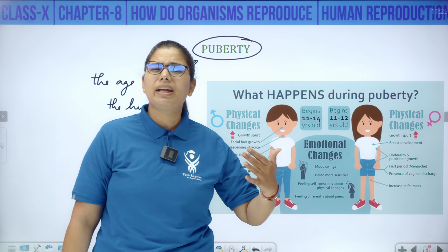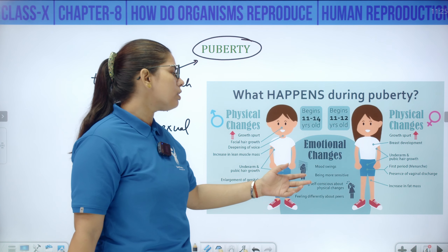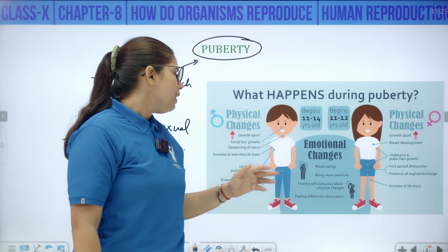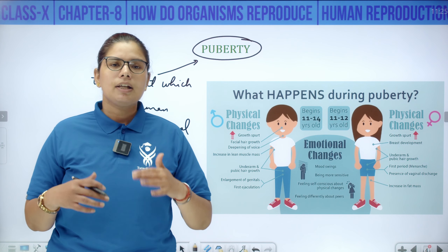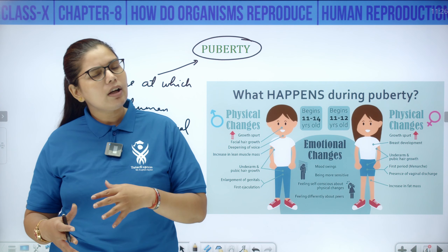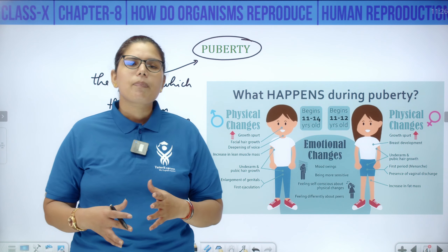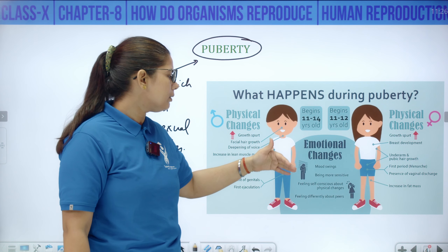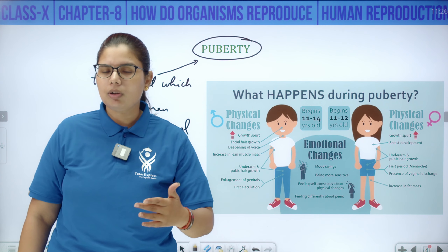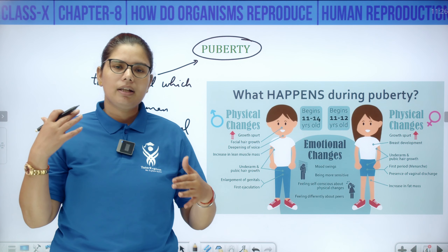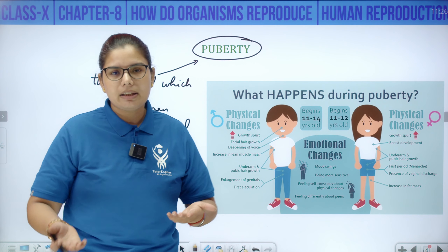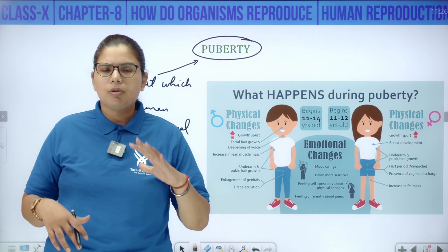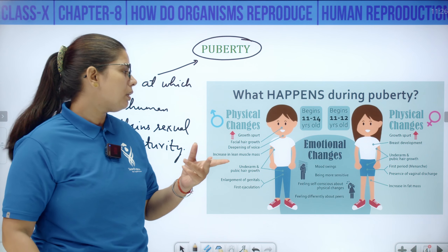Emotional changes are also there — mood swings, you start disliking or liking something suddenly, becoming more sensitive, feeling self-conscious about physical changes. You start taking your appearance very seriously — what to wear, how to look. Before this age, whatever your mother dressed you in, you were comfortable. But when you enter this pubertal change period, you start becoming more conscious and taking your own decisions. You also start feeling differently about peers.